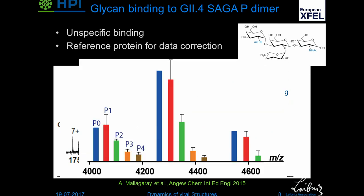You can see that here we have a nice ladder, and here we have much more on the P-dimer, so there is specific binding underneath this non-specific clustering. We can correct for that, and what we then get are these nice bar graphs showing just the specific binding. What you can see here is that we have up to four B antigens bound to a dimer, instead of the two that were anticipated originally.